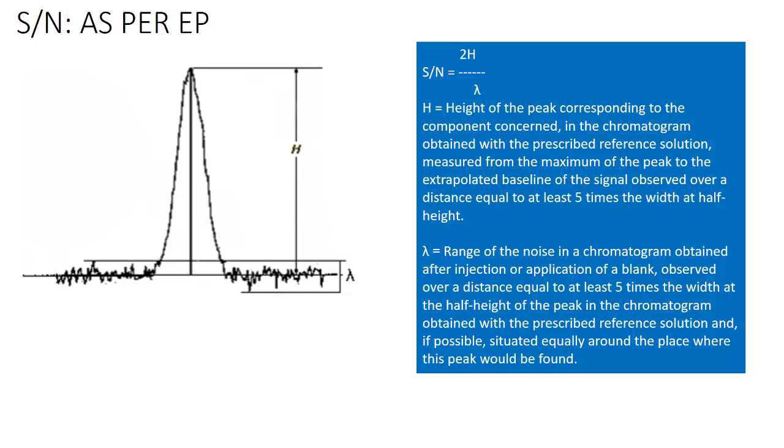The lambda is the range of the noise in the chromatogram obtained after injection or application of a blank observed over a distance equal to at least 5 times the width at the half height of the peak in the chromatogram obtained with the prescribed reference solution. And if possible, situated equally around the peak. So let us not worry about the description part.